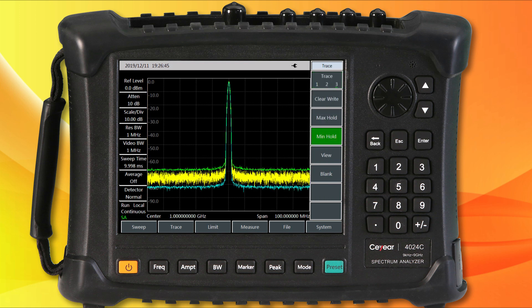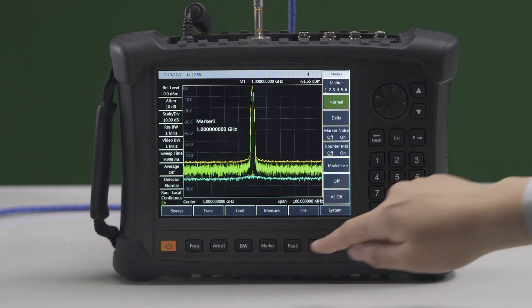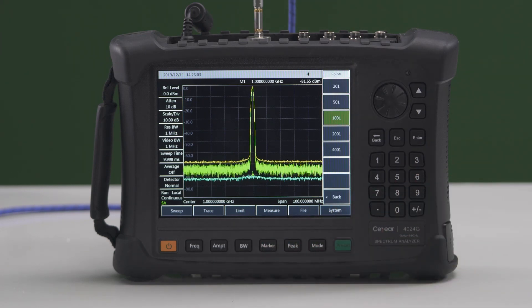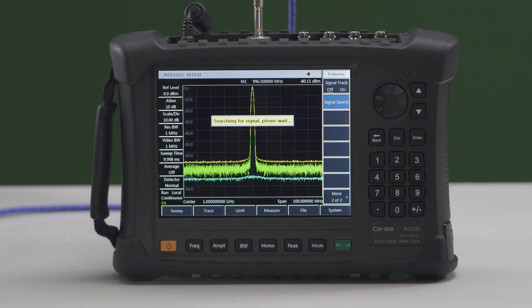In spectrum analyzer mode, C-Year 4024 supports 3 spectrum traces, 7 detection methods, 12 cursors, and up to 8,002 points of trace data. Using peak tracking and signal search functions, it can quickly locate signals. Frequency counting function can accurately measure signal frequency.